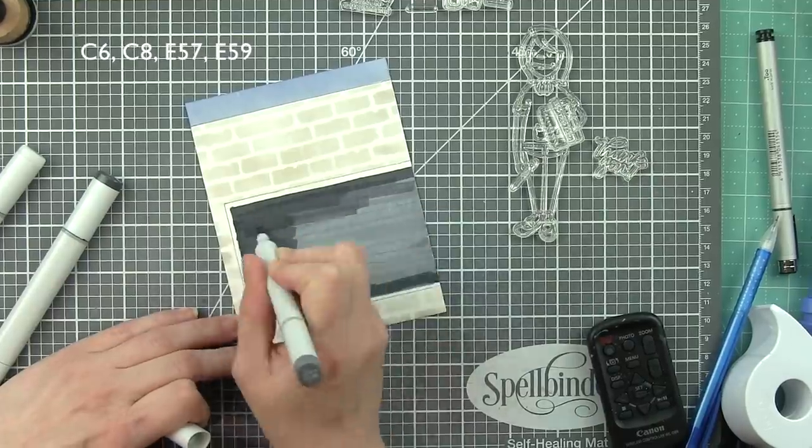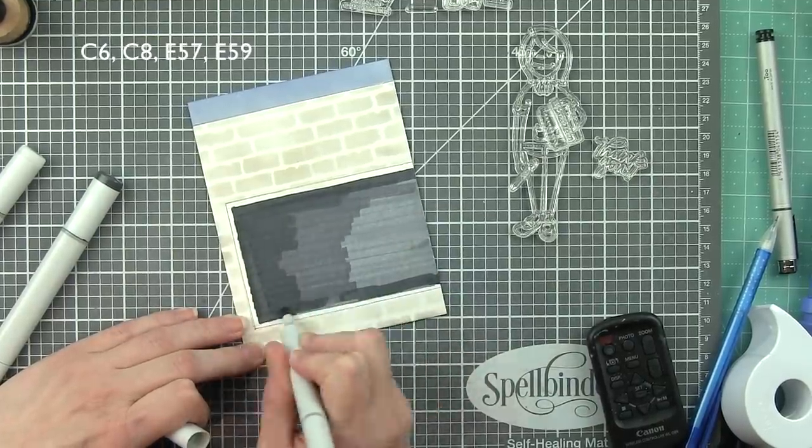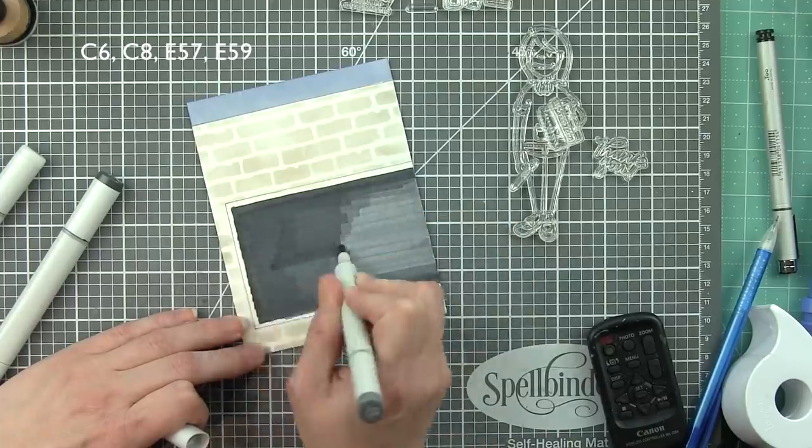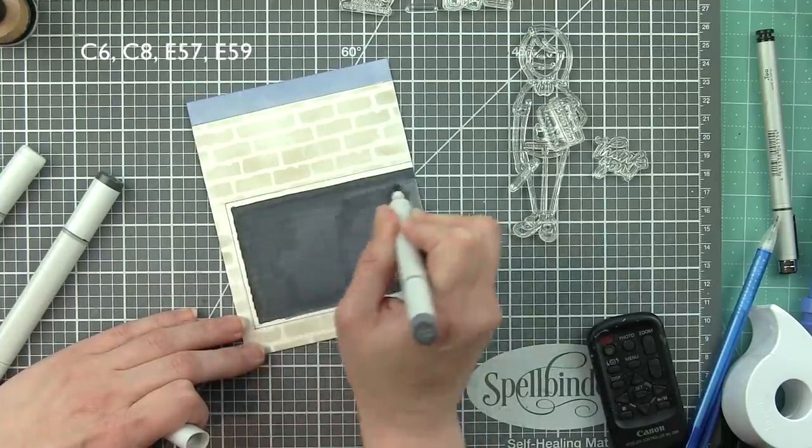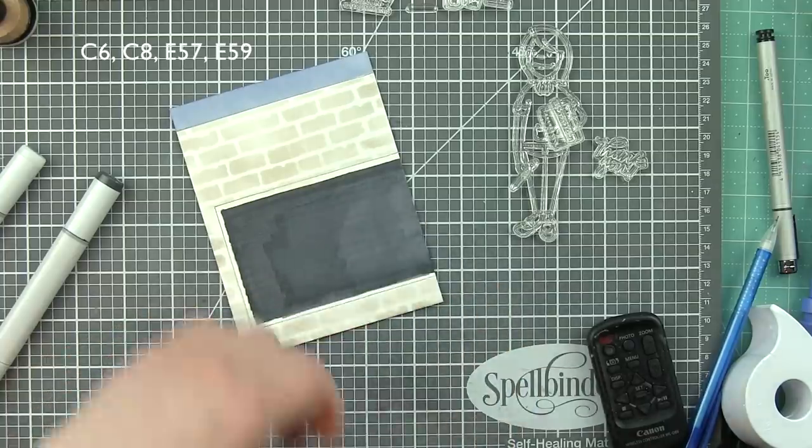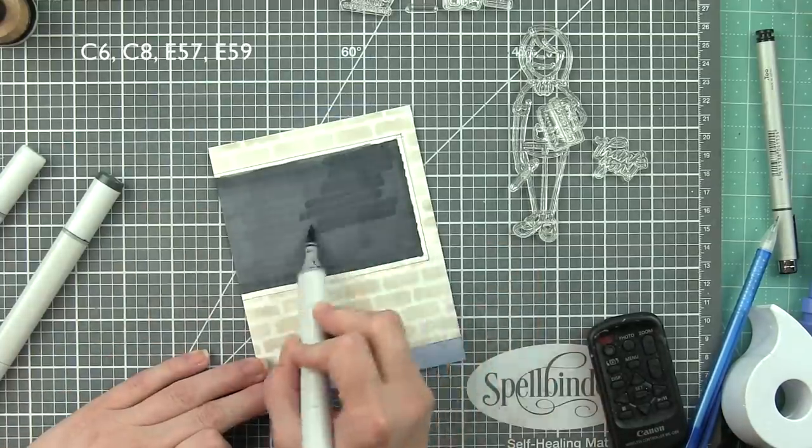I'm going to come in from the other side with that C6 maybe a little bit too, and then I'm going to go over the whole thing again with that chisel tip, with C6 to blend out those harsh lines. It takes a little bit of work. You kind of have to go over it a few times.